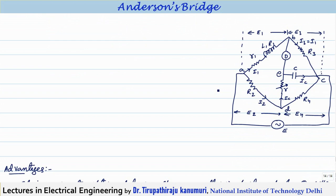The advantage is that it is easier to obtain balance than with Maxwell's Wien bridge for low Q coils, because R1 and r are independent variables. Varying one does not disturb the other equation. In Maxwell's Wien bridge with a fixed capacitor, varying resistors affects both equations simultaneously, making balance difficult for low Q coils. That problem is solved here since both equations are independent.